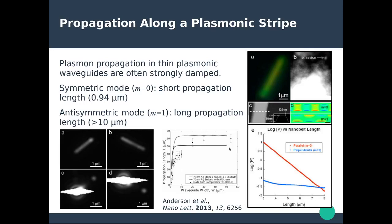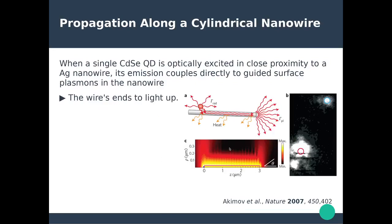Using the same concept but with cylindrical nanowires, you can do the same. This work was done in 2007 and is one of the first demonstrations of propagation along a nanowire from a quantum emitter. In actual optical measurements, the quantum dot shines light at the center and emission of light is observed on both ends of the silver nanowire, showing direct coupling of the quantum dot emission to the nanowire. I encourage you to refer back to chapter 9 on LSP and quantum emitter coupling.